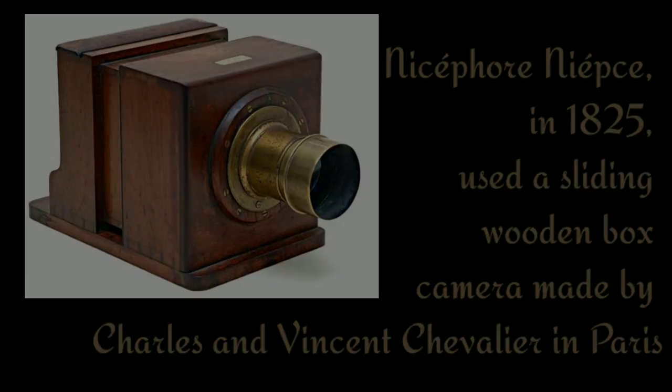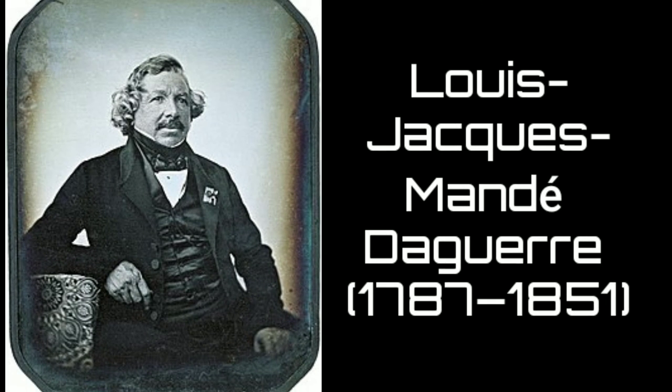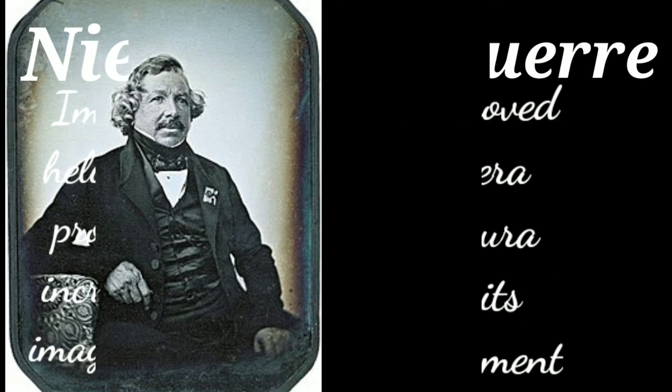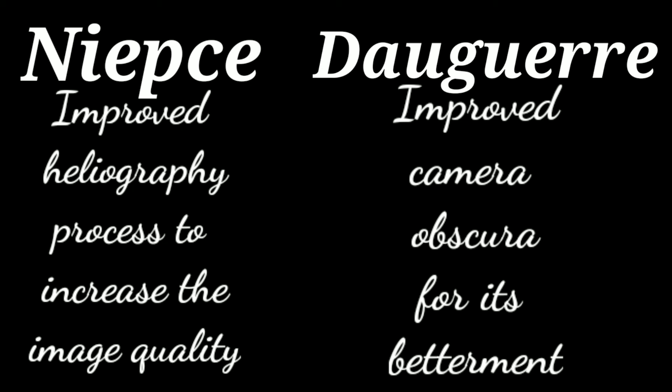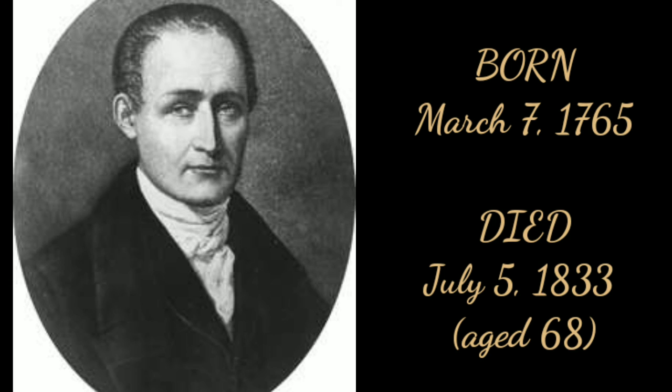The first permanent photograph of a camera image was made in 1825 by Joseph Nicéphore Niépce using a sliding wooden box camera made by Charles and Vincent Chevalier in Paris. Niépce had been experimenting since 1816 and succeeded in capturing the view from his window using an eight-hour exposure on pewter coated with bitumen. He later corresponded with inventor Louis Jacques Mandé Daguerre, and the pair entered a partnership to improve the heliographic process. Daguerre contributed an improved camera obscura design, but the partnership ended when Niépce died in 1833. Later historians reclaimed Niépce from relative obscurity, and his heliography is now generally recognized as the first successful example of what we now call photography.